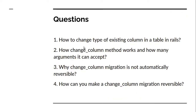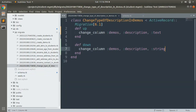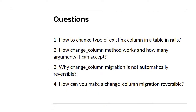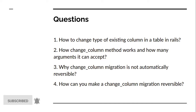Now for the Q&A section. First question: how do you change the type of an existing column in Rails? We use the `change_column` method inside the migration. Second question: how does `change_column` work and how many arguments does it accept? It accepts three arguments — the table name, the attribute name, and the type you want to change to.